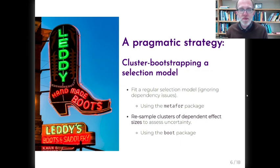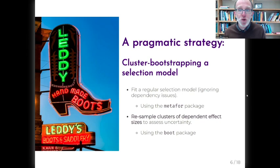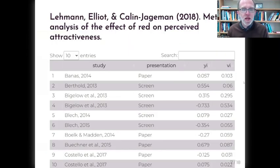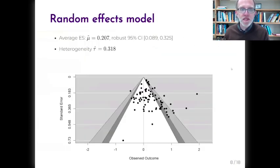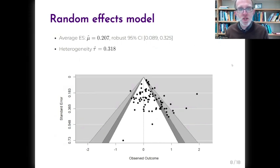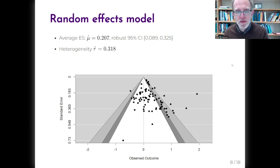We want to explore a pragmatic strategy for investigating selective reporting while dealing with dependent effect sizes. Our approach is to fit a regular selection model as implemented in the metaphor package, and then use a cluster-level bootstrap to account for the dependency, using standard methods implemented in the boot package. For demonstration, we use data from a recent meta-analysis by Lehman and colleagues on the effect of the color red on attractiveness judgments — 81 effect sizes from 41 studies. A basic random effects meta-analysis indicates an average effect of about 0.2 standard deviations and substantial heterogeneity of about 0.32; the funnel plot shows some asymmetry suggesting selective reporting bias.